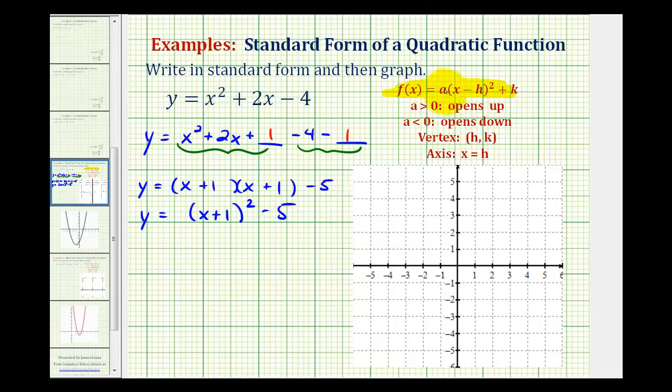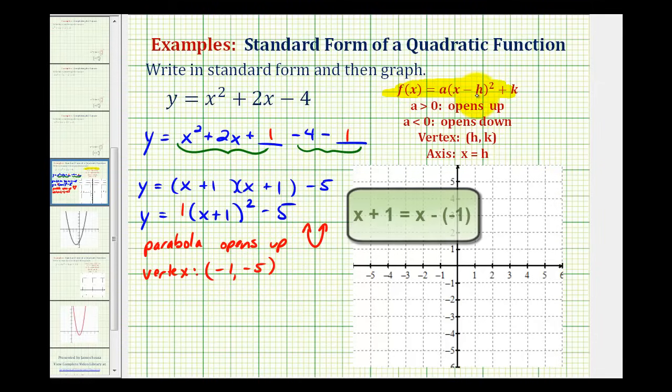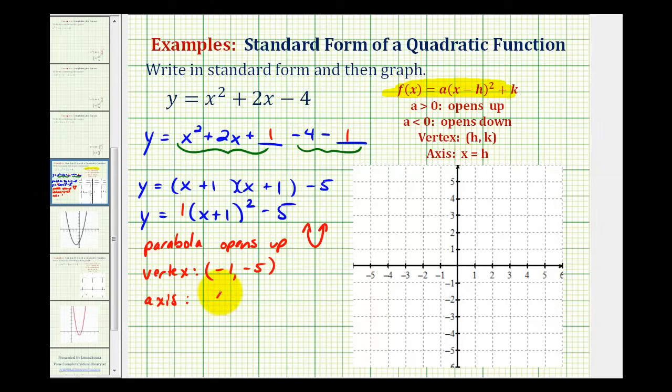So from here we should recognize that a is going to be equal to positive 1, so the parabola opens up something like this. Next the vertex will have an x coordinate of negative 1 and a y coordinate of negative 5. Remember, we have to be careful about these signs. It has to be in the form of x minus h, so therefore the x coordinate is negative 1, and then the y coordinate is k, and because we have minus 5, the y coordinate is negative 5. And then because the vertex has an x coordinate of negative 1, we know the equation of the axis of symmetry would be x equals negative 1.